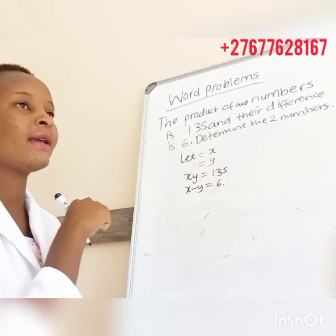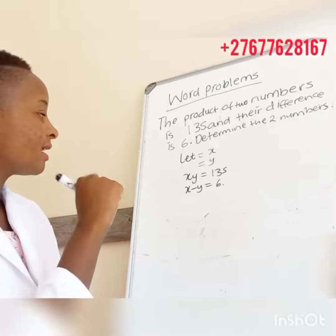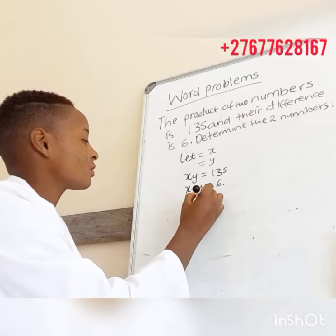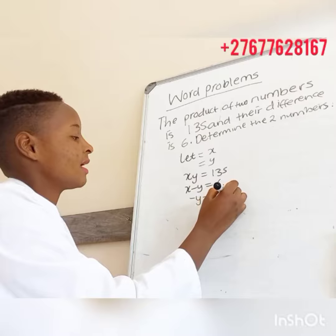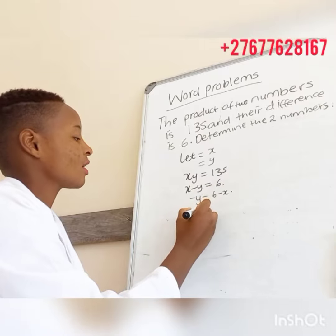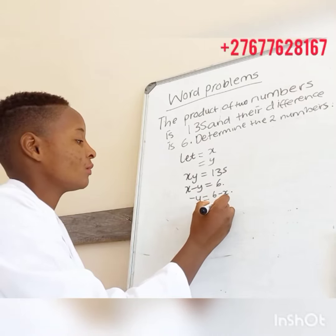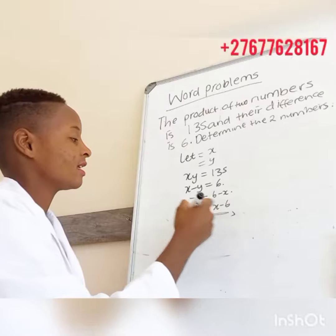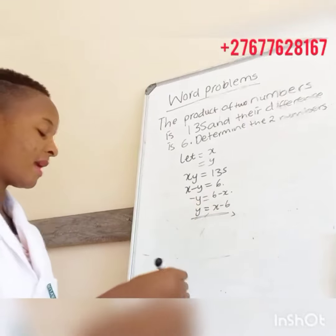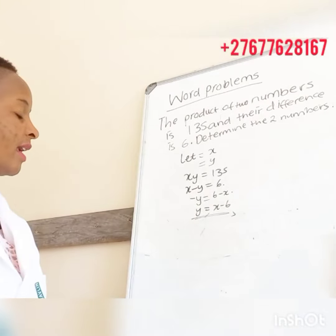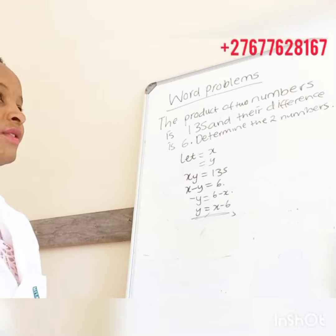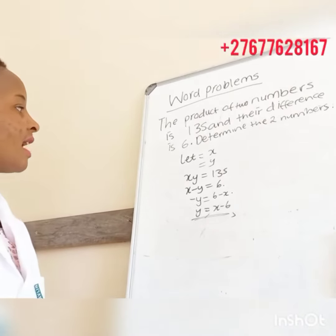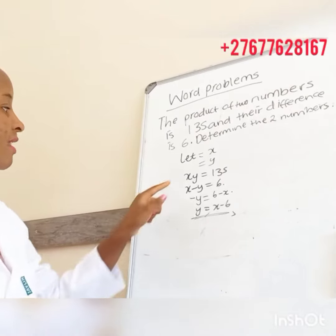But then when they subtract each other, if we say x minus y we'll get 6. Now let's write y in terms of x. We'll say minus y is equal to 6 minus x, so positive y is equal to x minus 6 — I just divided both sides by negative one.